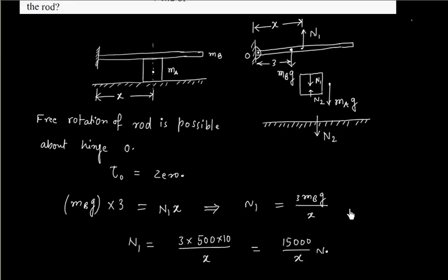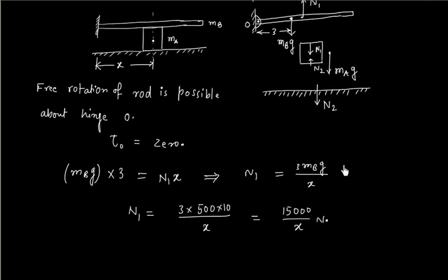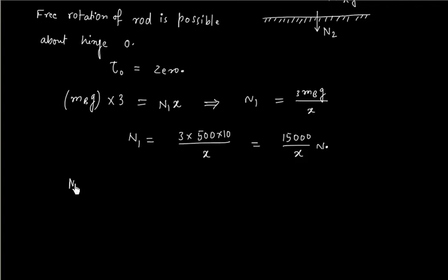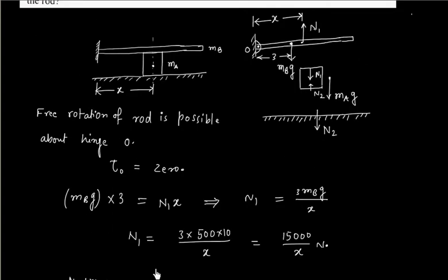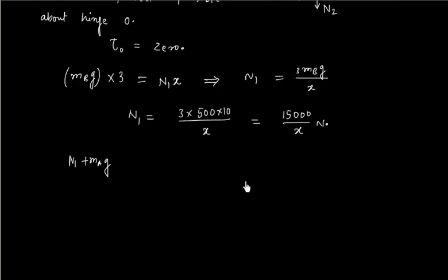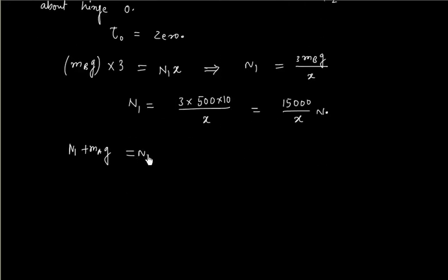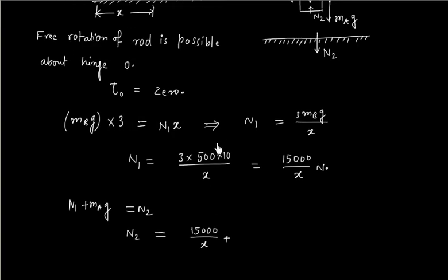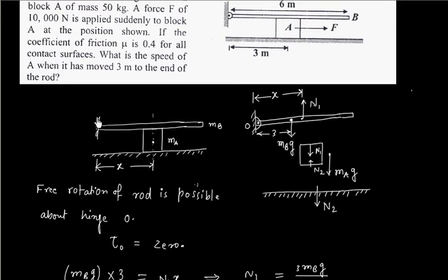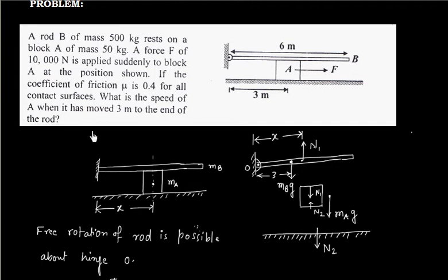Now calculate N2. Since in the vertical direction this block is at rest, so total force in the vertical direction is zero. So N1 plus MAg is equal to N2. So from here we can calculate N2, that is N1 plus MA times g. Mass of A is also given, this is 50 kg.